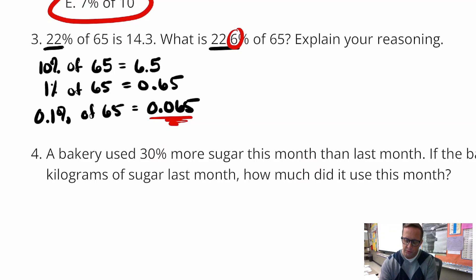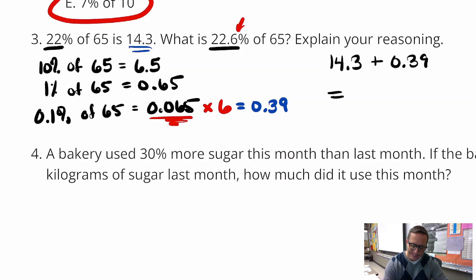Because we have, right here, we have 6 of those. We have 6 tenths. So if we multiply that by 6, if you multiply that by 6, you're going to get .39. .065 times 6, yeah, .39. That equals .39. And so if we add that on to 14.3, because that's all the part that was added there, so we just do 14.3 plus .39, and you get 14.69.